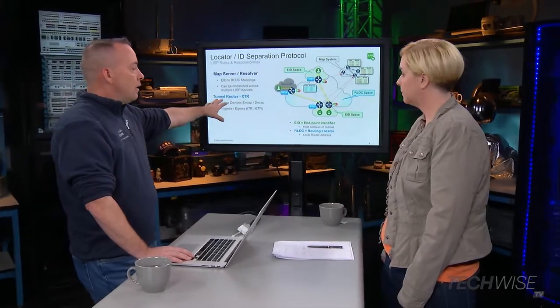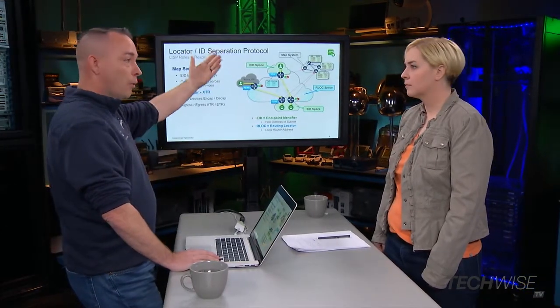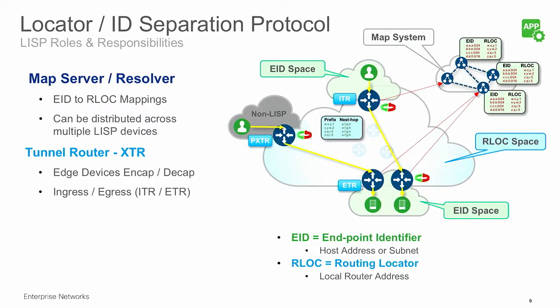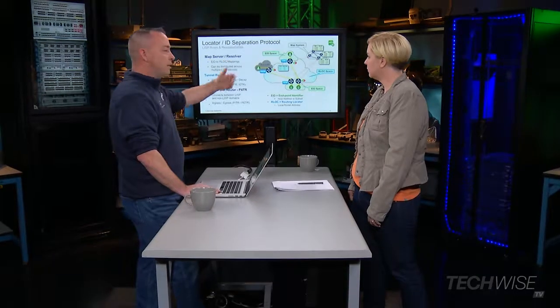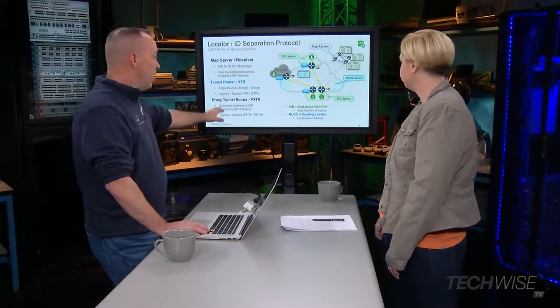Once I have the mapping system, the edge devices — these tunnel routers — all they need to do is ask where something is at. They also perform the encapsulation and de-encapsulation, putting that VXLAN header on. When they need to figure out where Lauren is, they ask the map system. The map system tells them, and the packet gets sent to the other side. There is also a special one called a proxy tunnel router — basically if I don't know where else to go, or if the map system doesn't know where something is, just send it to the proxy tunnel router. That's mainly used for things like the Internet or a different network within.